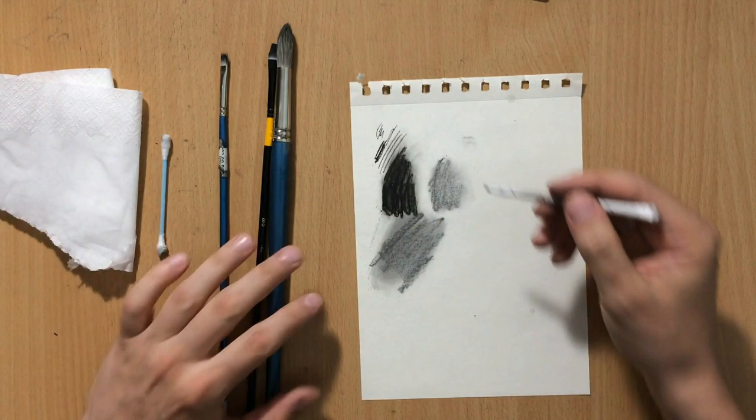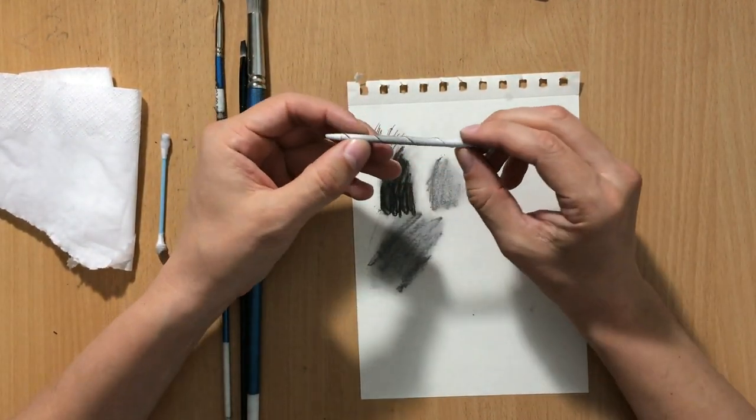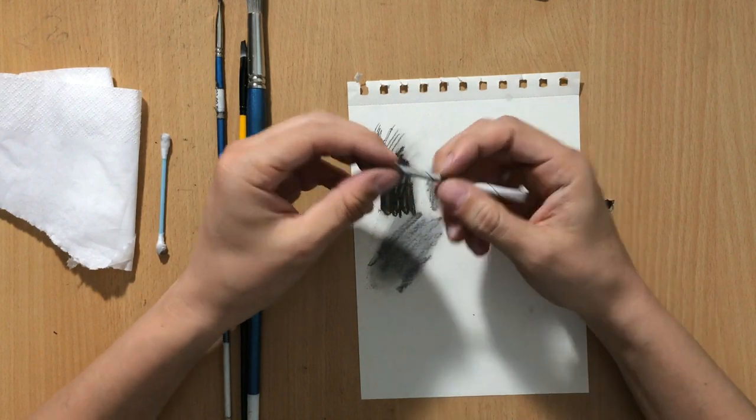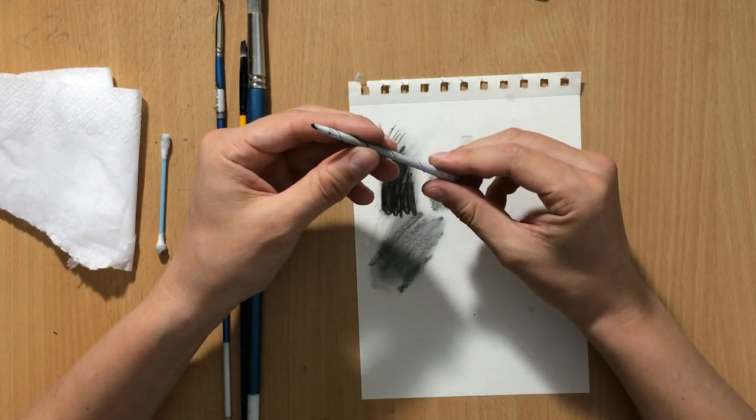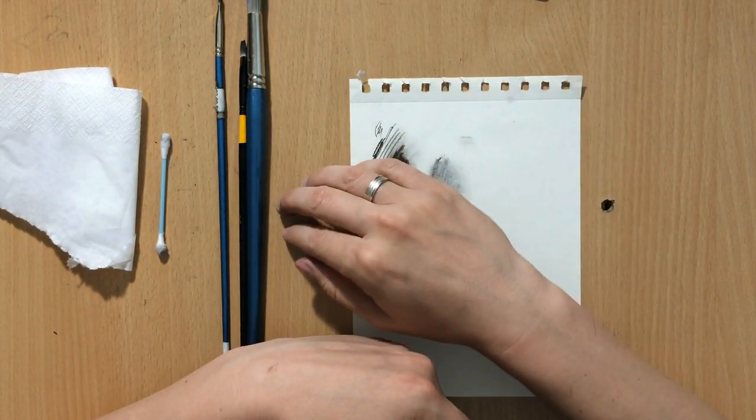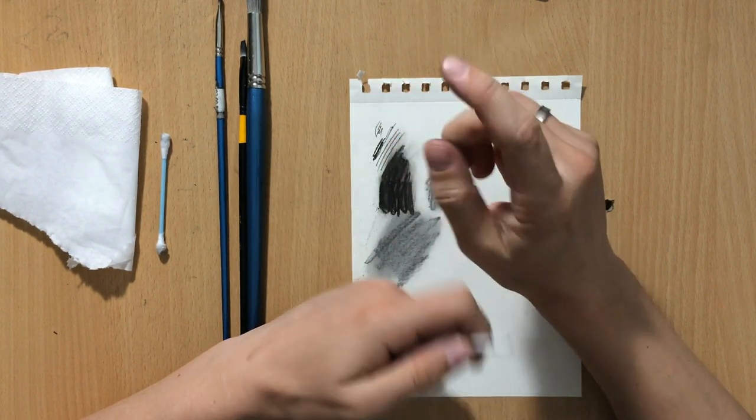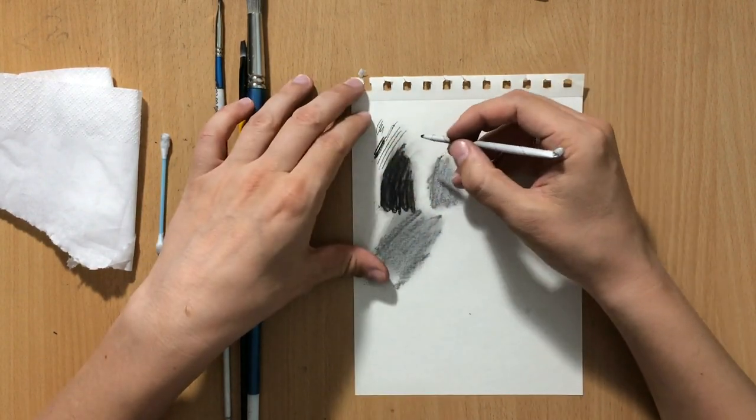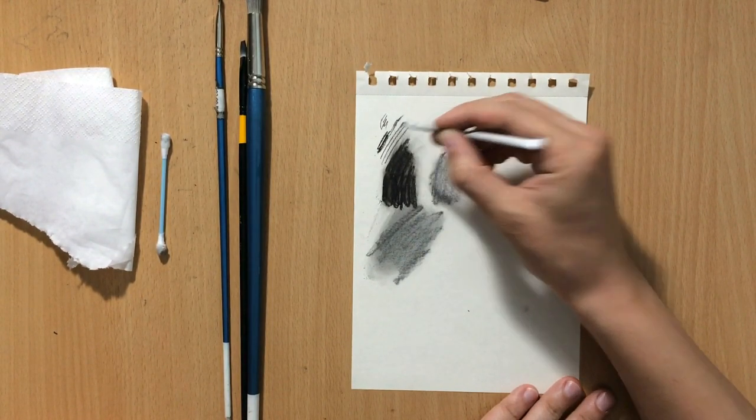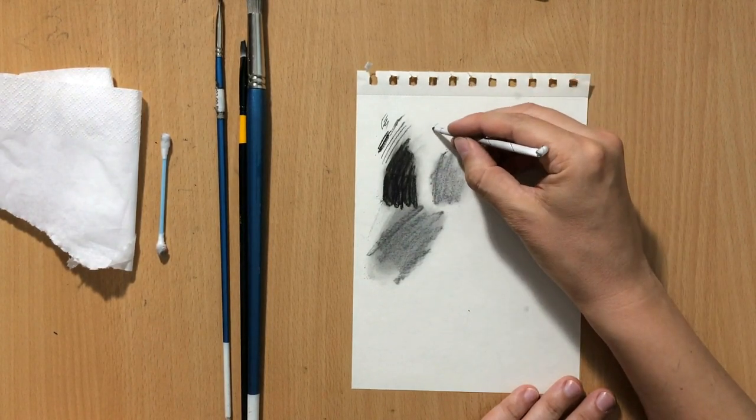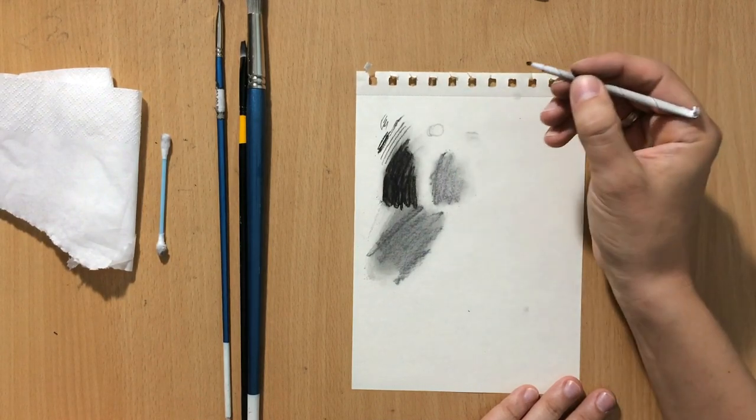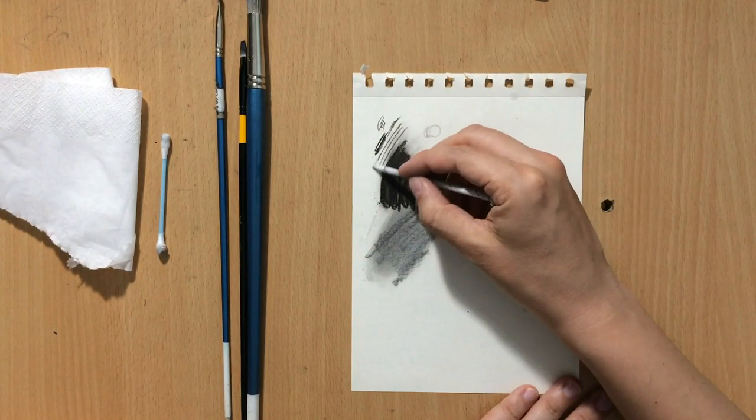You can also use tortillions and blending stumps. I make these myself—I'll put the link in the description if you want to learn how. I'll also link my video on different blending tool effects. Tortillions can blend smaller areas, and with charcoal on them, they work as drawing tools. You can draw smaller details where you want something lighter without as clean an edge as a pencil.